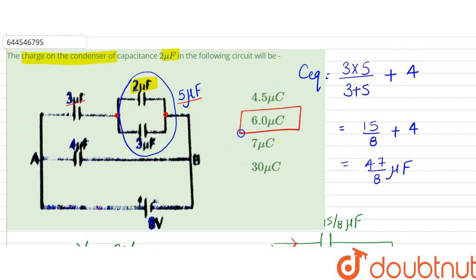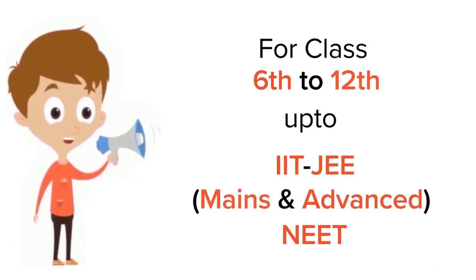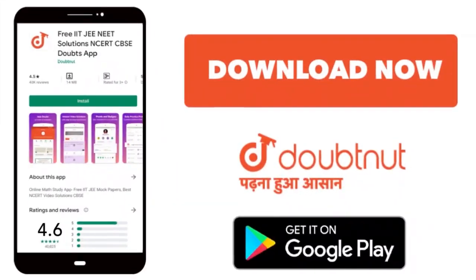be 6 microcoulomb, that is option B is the answer. Thank you. For class 6 to 12, IIT-JEE and NEET level, trusted by more than 5 crore students, download Doubtnet app today.